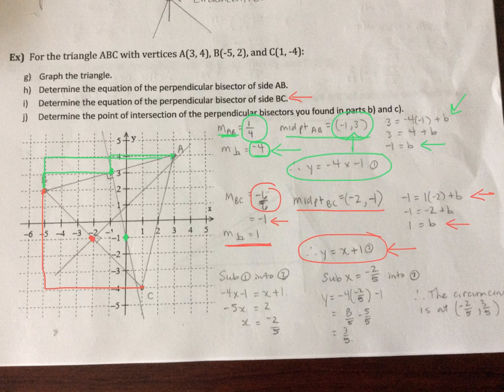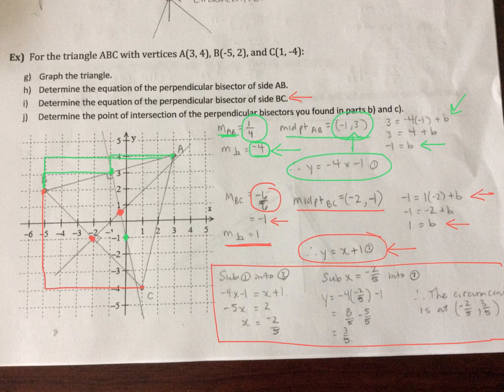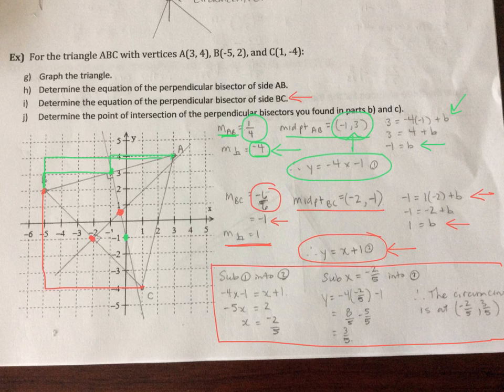And then I want to find that point of intersection. So I did a solving the system, walk through that process that you should have figured out from the last unit. And my circumcenter would be at negative two fifths comma three fifths.